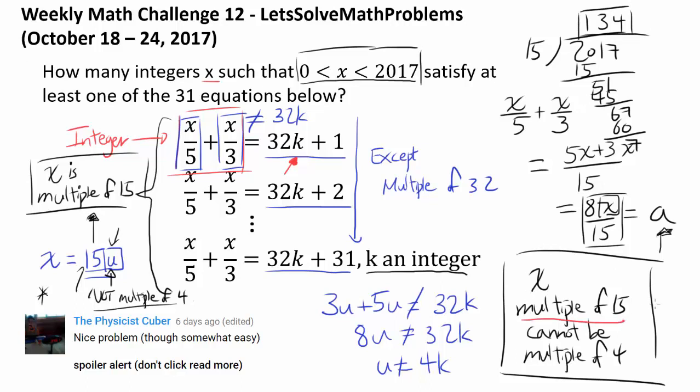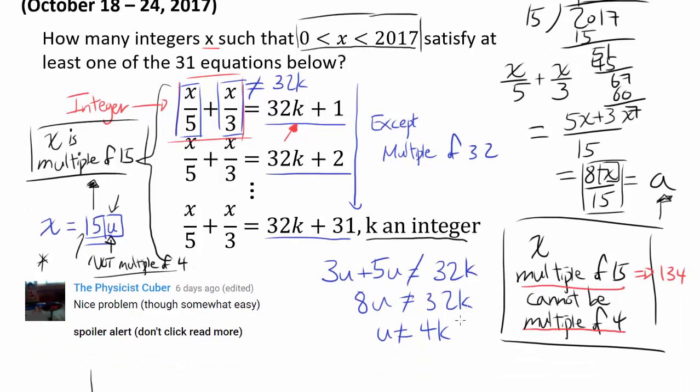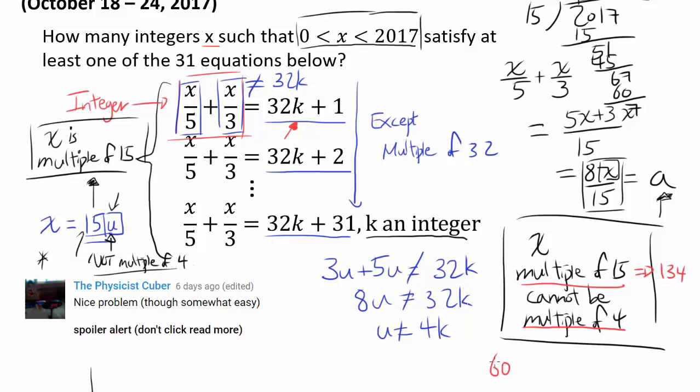So this multiple of 15 is telling you there's 134x, but you gotta take away x that's multiple of 4 and multiple of 15 at the same time. So we gotta take away multiples of 60, which is multiple of 15 and multiple of 4.